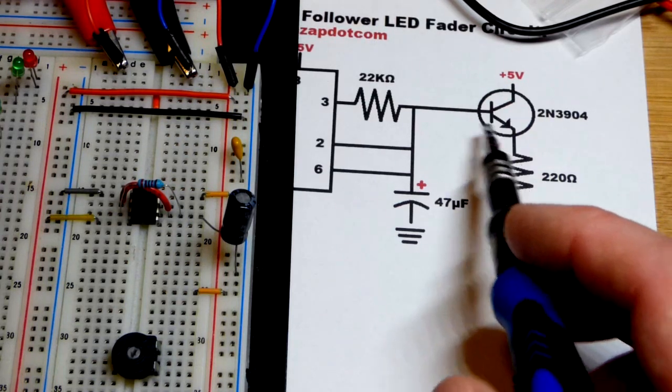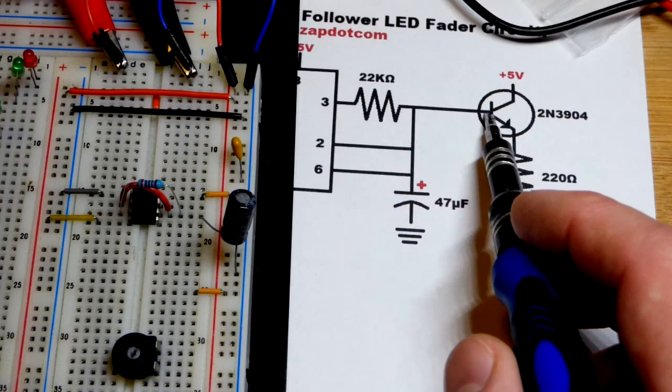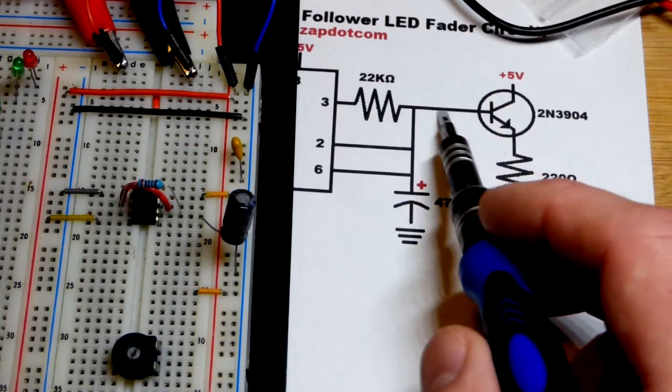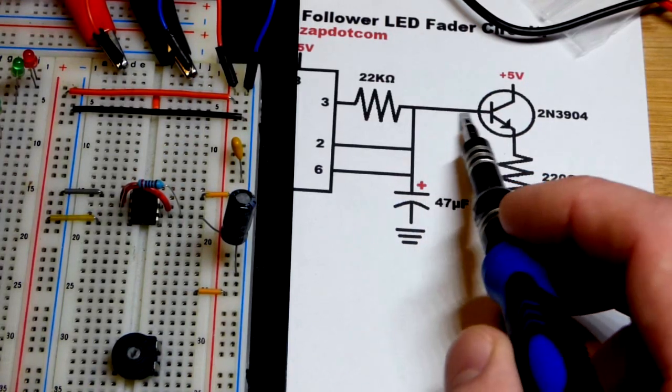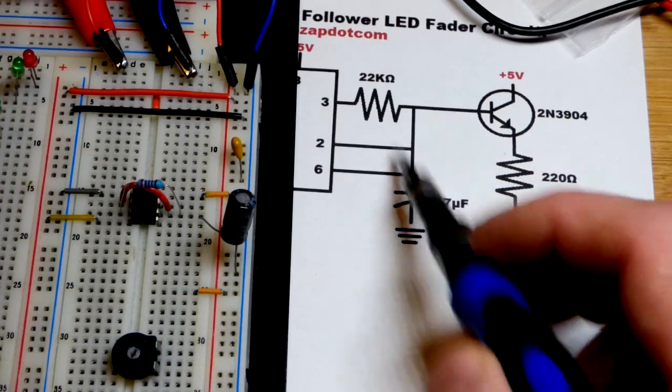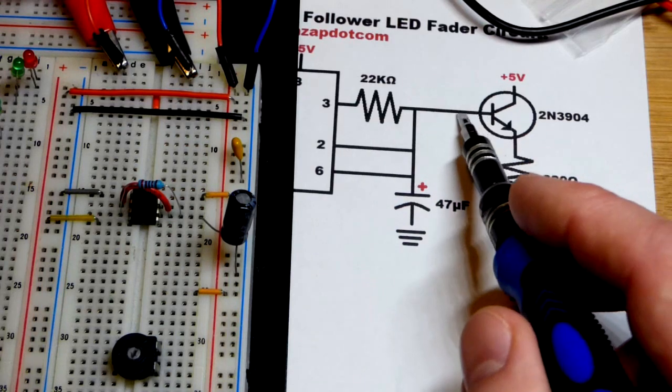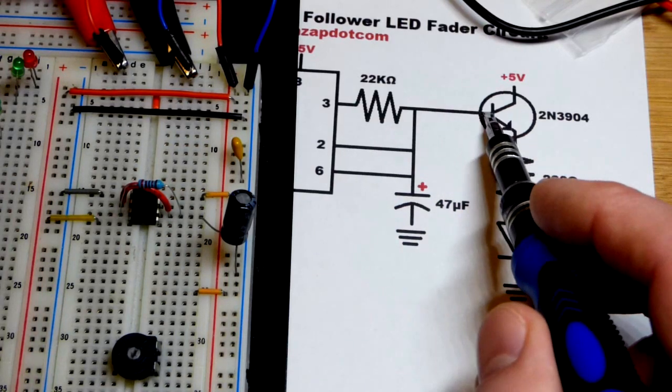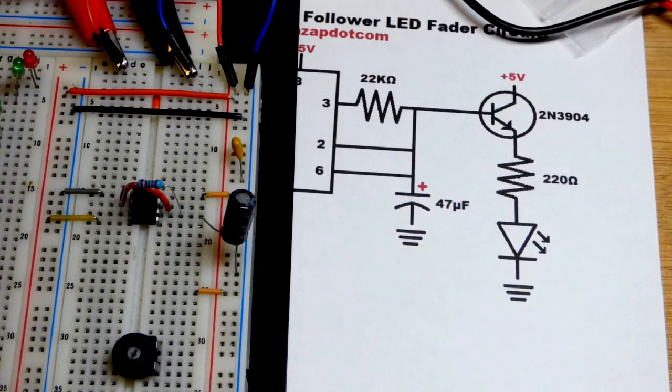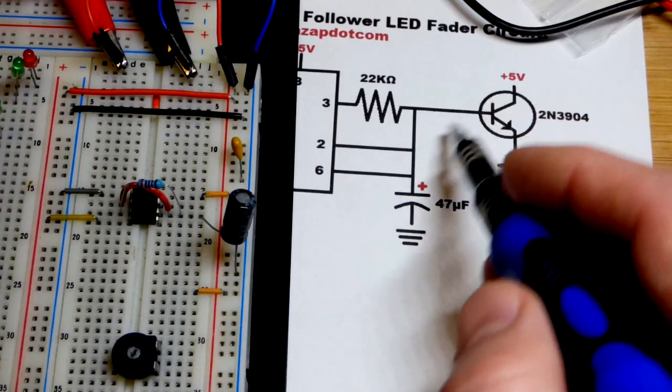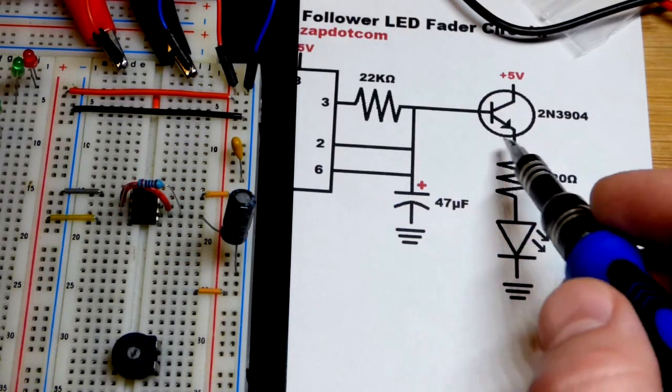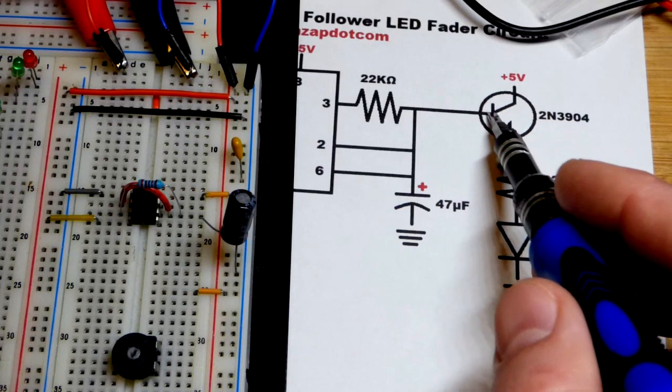What this does is it takes the voltage at the base, and it may be a good idea to put a resistor here, especially if the components you're using are not working properly. Because you just give the base a voltage, you don't really want to give it current.